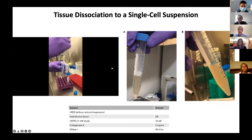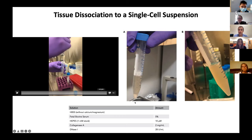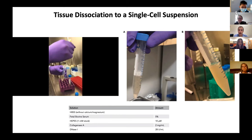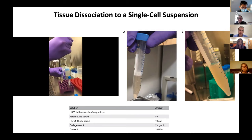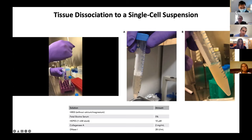For mouse brains, we first do a transcardial perfusion using ice cold saline to clear the vasculature of as much blood as we can. We then dissect out our brain region of choice and mince it on a petri dish on ice with fine scissors, then place it into our enzyme digestion mix on ice. Our enzyme mix consists of HBSS, FBS, HEPES, and the enzymes collagenase and DNase. We pipette up and down with successively smaller pipettes with heated incubation times in between to get down to a single cell level.